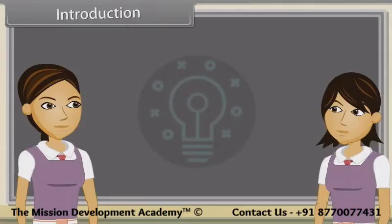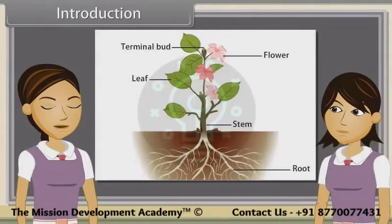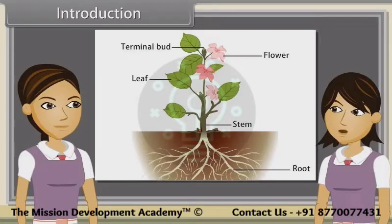When we observe a plant, we see that every plant has roots, stem and leaves. Plants also have flowers. We have already discussed characteristics, types, modifications and functions of roots, stems, leaf and inflorescence. Now we will study flowers.